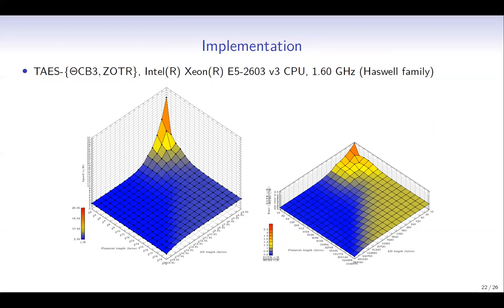These graphs show the result of ThetaCB3 and Z-OTL, where we again use T-AES as the underlying TBC, and this time we use the Haswell family of CPUs in our implementation. This graph shows the absolute speed of Z-OTL, and in the fastest case, Z-OTL reaches a speed of about 2.33 cycles per byte. We have a similar observation to before: if the input length is long and the plaintext length is longer than the AD length, then Z-OTL performs better than ThetaCB3.